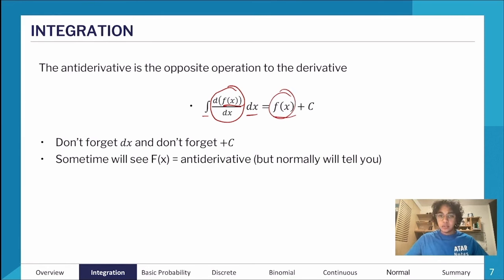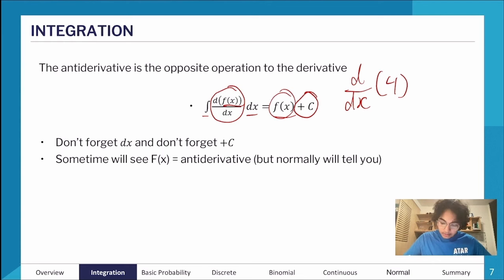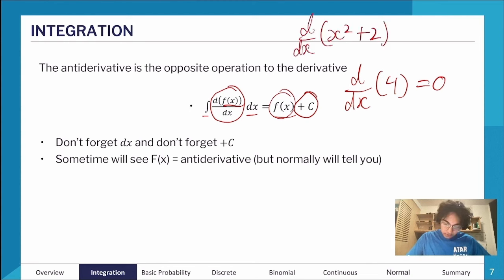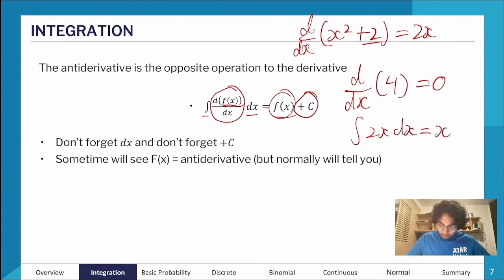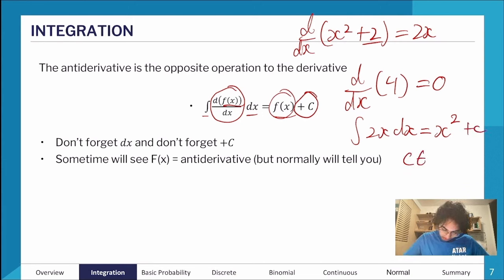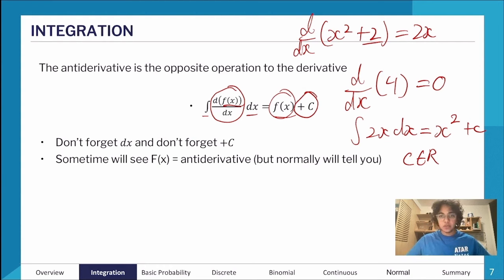The integral will always spit out the original function — f(x). Another thing you always need to write with an integral is plus C. When you take a derivative of a constant value, say 4, that equals zero. So if I have x squared plus 2 and take the derivative, I get 2x — that plus 2 is gone. So when integrating 2x, I get the x squared part but not the 2. To cover for that, we write plus C. Plus C is any real number, and sometimes they'll give you enough information to solve for C — maybe telling you it goes through the point (0, 2). Make sure you include it; you usually lose marks if you don't.